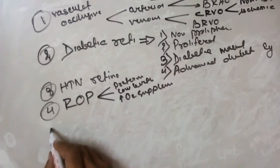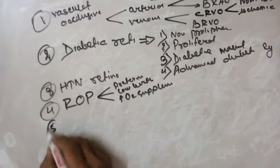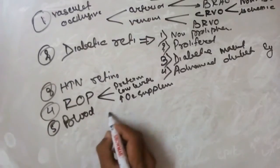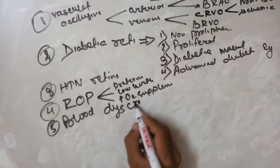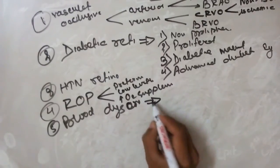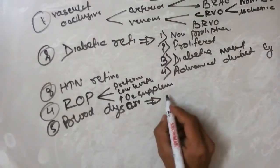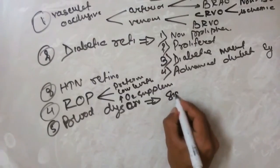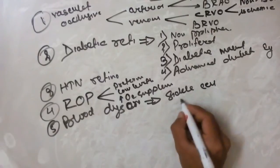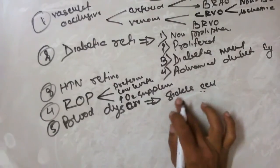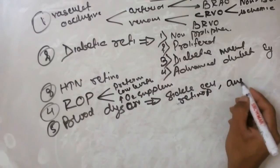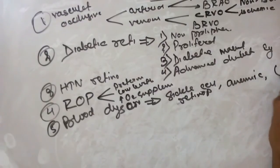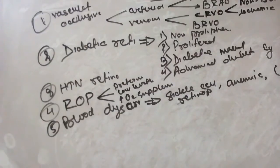Now coming to other blood dyscrasia related retinopathy. The blood-related retinopathic disorders we will study are sickle cell retinopathy, anemic retinopathy, and leukemic retinopathy — all related to blood dyscrasias.